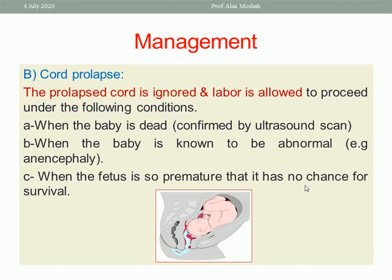In case of cord prolapse, the prolapsed cord is ignored and labour is allowed to proceed under the following conditions: when the baby is dead — counsel your patient and continue vaginal delivery; or when the baby is known to be abnormal, such as anencephaly, with no chance for survival — counsel your patient and continue vaginal delivery.